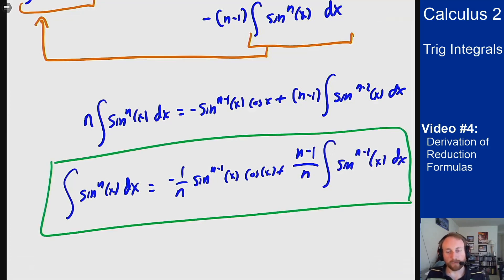So that's how you derive this reduction formula using integration by parts. The important part of the process is we know it's integration by parts and then we have to figure out what do we pick for our dv so it's something we can integrate.